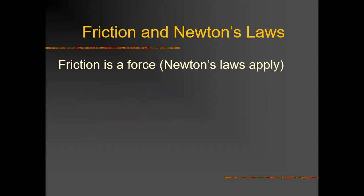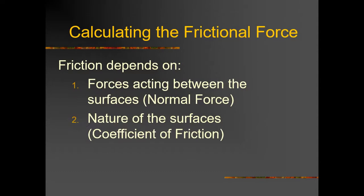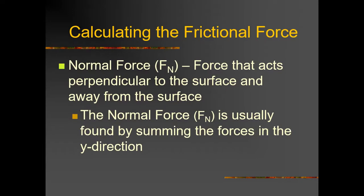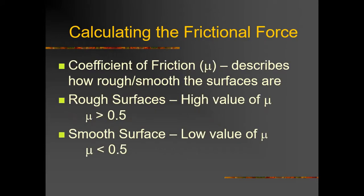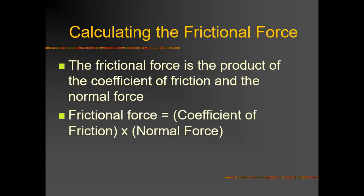Friction is a force that acts parallel to the surface in the opposite direction of motion. The friction force depends on the coefficient of friction mu and the normal force N. A rough surface has a high value of mu (greater than 0.5) and a smooth surface has a low value (less than 0.5). The friction force formula is: f = μ × N.